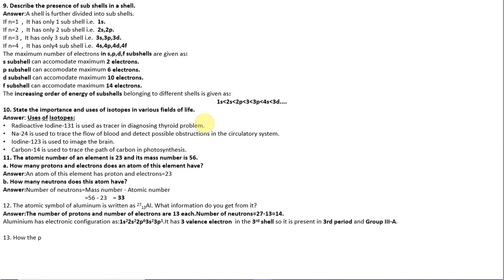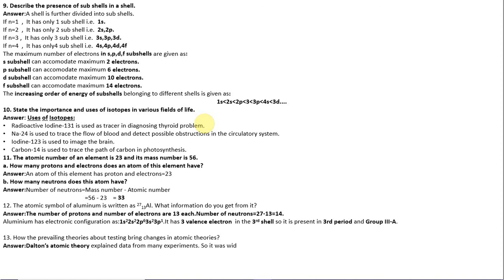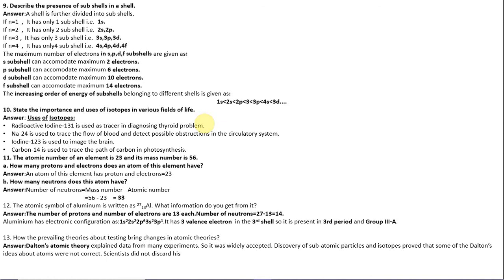Question 13: How do prevailing theories about testing bring changes in atomic theories? Dalton's atomic theory explained data from many experiments and was widely accepted. However, the discovery of sub-atomic particles and isotopes proved that some of Dalton's ideas were not correct. Scientists revised the theory to account for new discoveries, showing how prevailing theories can bring changes in atomic theory.